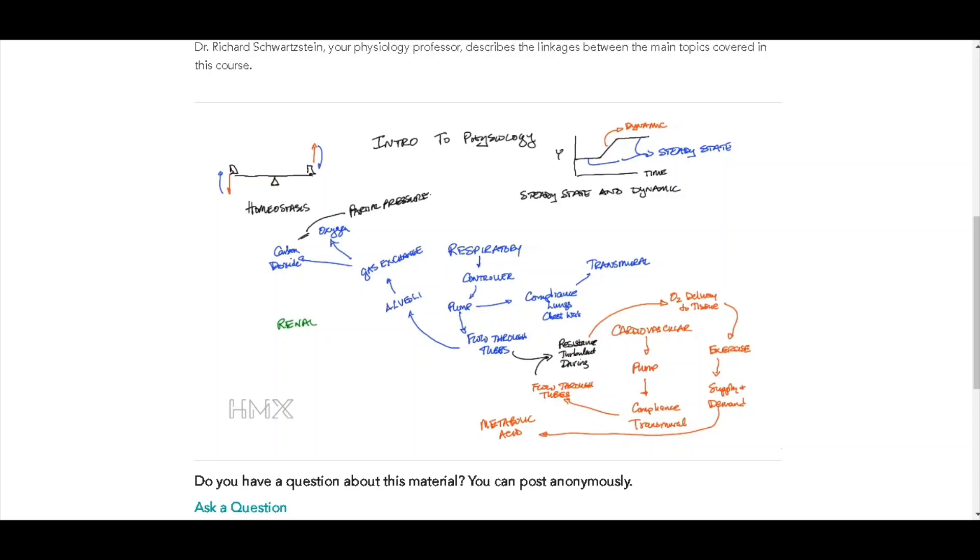Both of these gases have different interactions with hemoglobin, which is important as well. Now, if I can't get carbon dioxide out of the body, I develop a respiratory acid.